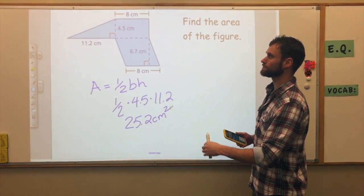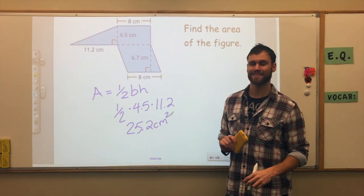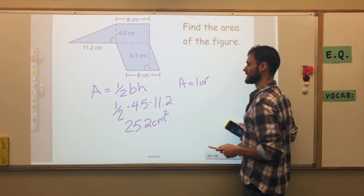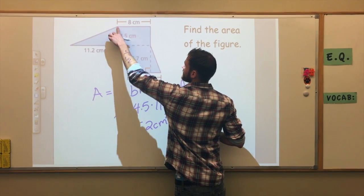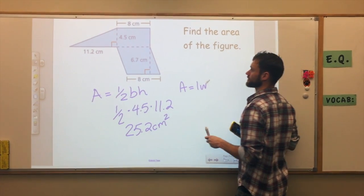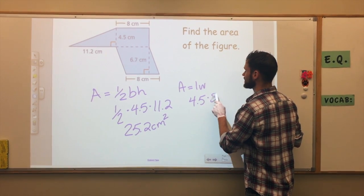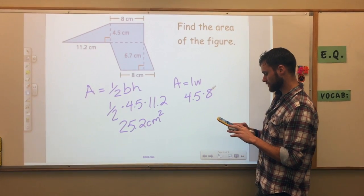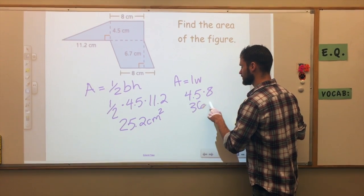Next is the rectangle. The area of a rectangle equals length times width. The width is 4.5 centimeters and the length is 8 centimeters. So 4.5 times 8 — the order doesn't matter in multiplication — gives us 36 centimeters squared.